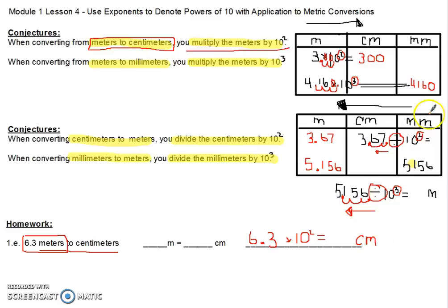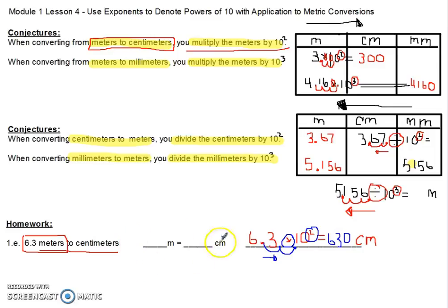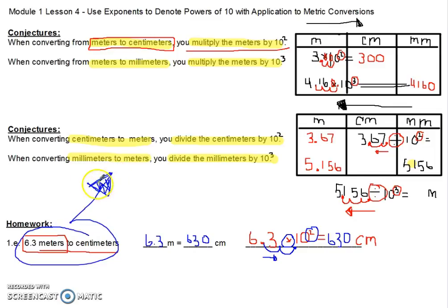I'm multiplying, so my decimal is going to move to the right two place values from the exponent. I go one place value, two place values, and there's already a zero in that spot. My answer is 630 centimeters. So the meters from the problem are 6.3, and the answer is 630 centimeters. Always match the problem to the correct conjecture, write your equation to solve, then fill in your answer.